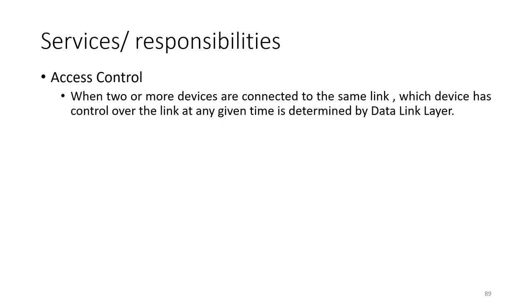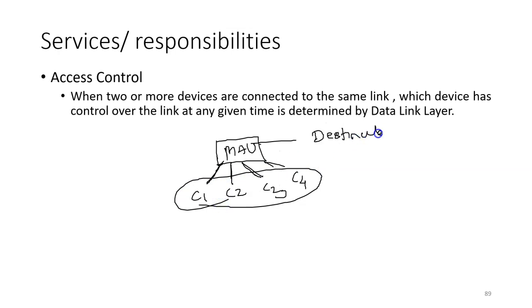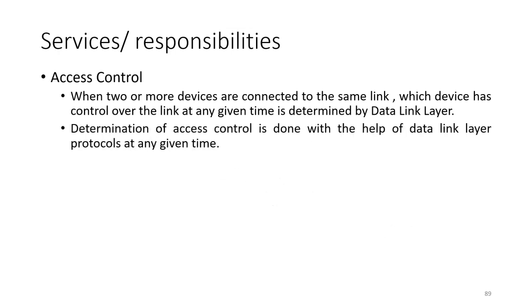The next service is access control. When two or more devices are connected to the same link, which device has control over the link at any given time is determined by the data link layer. For example, if you have a multi-station access unit with a number of devices and there is contention for sending data to the destination, the data link layer determines which device gets control. This determination is done with the help of data link layer protocols.